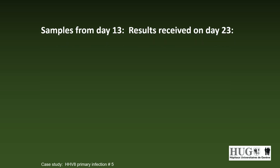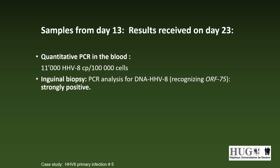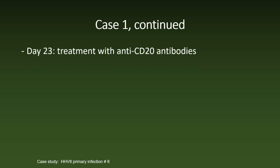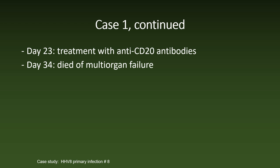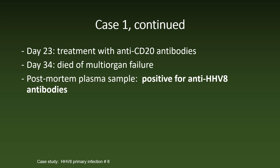The diagnosis was finally established on day 23. On the samples taken 10 days before, quantitative PCR for HHV-8 was high in the blood. PCR analysis for HHV-8 DNA was also strongly positive in the inguinal biopsy. But surprisingly, anti-HHV-8 antibodies were not present on day 13. On day 23, treatment with anti-CD20 antibodies was started. Unfortunately, this was too late and the patient died on day 34 of multi-organ failure. A post-mortem plasma sample was positive for anti-HHV-8 antibodies, thus establishing the diagnosis of primary HHV-8 infection.